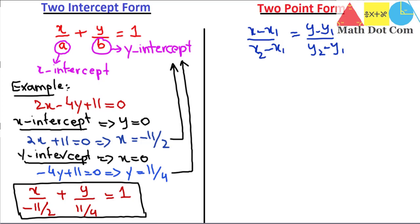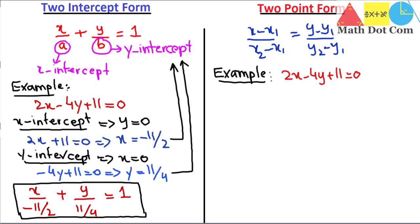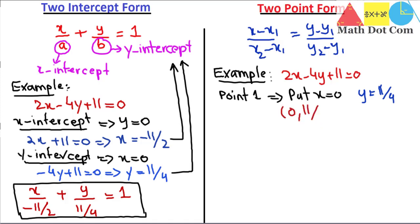Now let's see how you can get the two-point form of the linear equation. For the two-point form you need, as is obvious, two points. We will use the same example: 2x minus 4y plus 11 equals 0. We need any two random points that lie on this line. It is easier to put x equals 0 or y equals 0. Putting x equals 0, we get y equals 11 by 4, so point 1 is (0, 11/4).